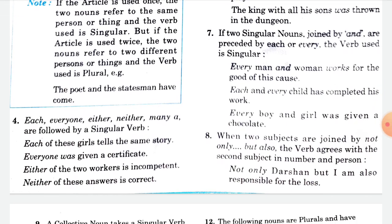If two singular nouns joined by 'and' are preceded by 'each' or 'every', the verb is singular. Previously we learned that each, every, neither, either, and many a are followed by singular verb. If we have 'and' and two articles are used, the verb will be plural; if one article is used and two subjects refer to one person or thing, the verb is singular.